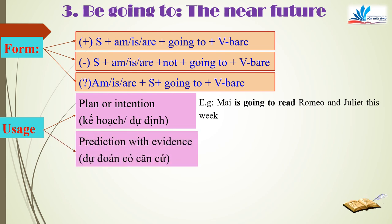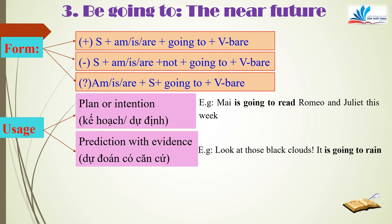We also use the near future to talk about predictions with evidence. For example: Look at the black clouds — it is going to rain. Khi chúng ta nhìn thấy dấu hiệu như những đám mây đen, chúng ta suy đoán sự việc xảy ra tiếp theo. Với những dự đoán có căn cứ, chúng ta sử dụng thì tương lai gần.